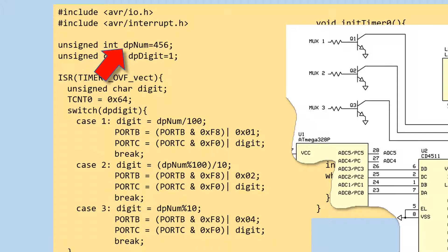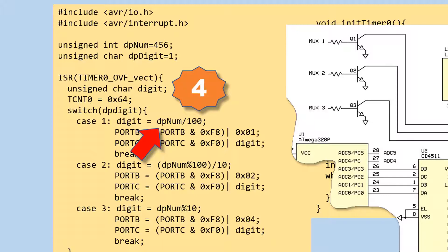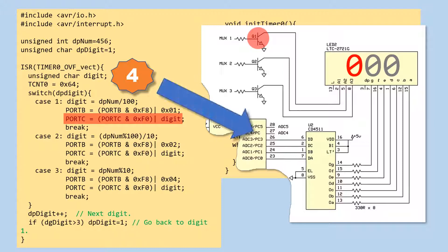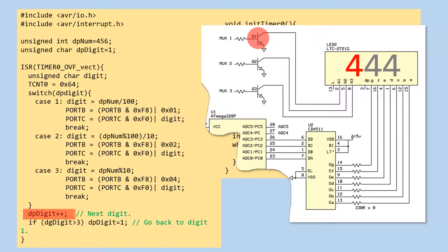Another global variable, dpNum, is used to determine what to display on the 3-digit display. It is initialized to 456. This instruction extracts the digit 4 from dpNum. This instruction turns on the MUX1 transistor, so the first digit of the 3-digit display turns on. This instruction sends the data 4 to the BCD-to-7-segment decoder, so 4 is displayed on the first digit. dpDigit is then incremented from 1 to 2.